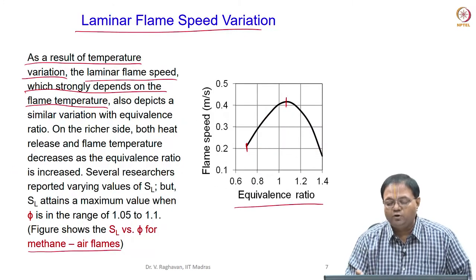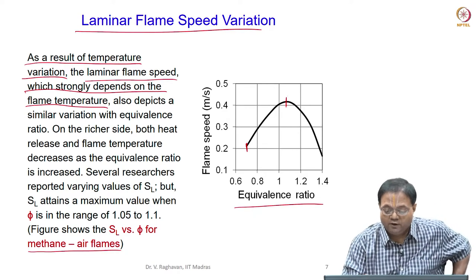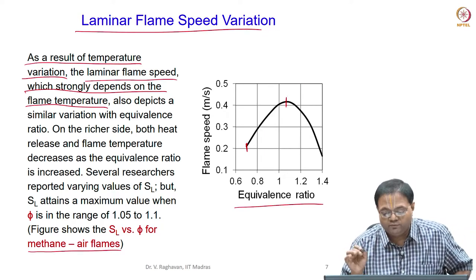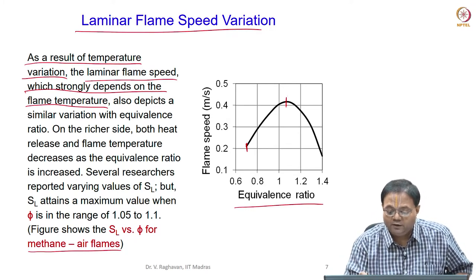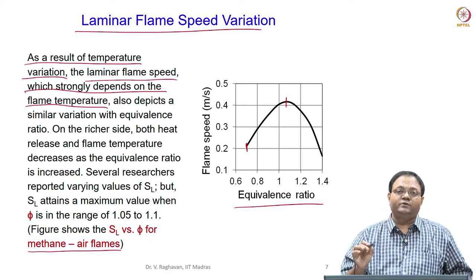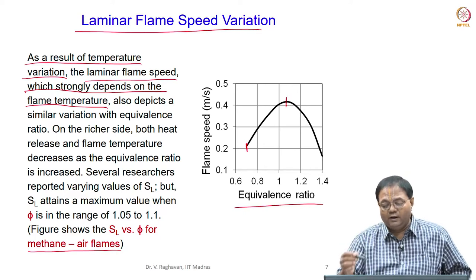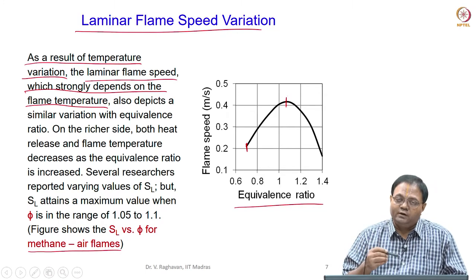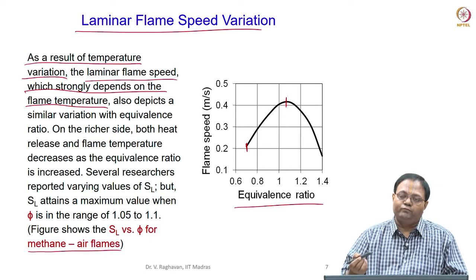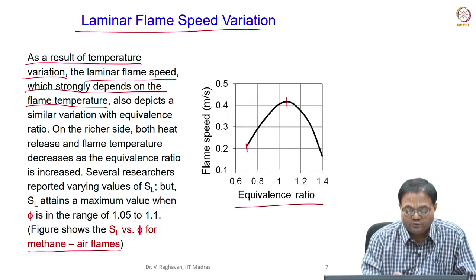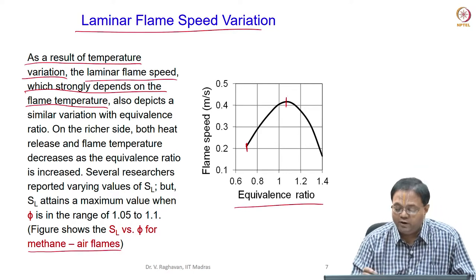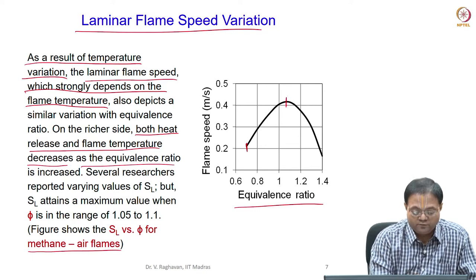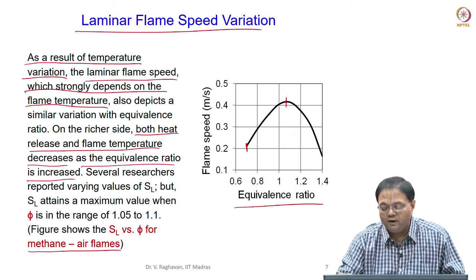Temperature strongly influences the variation of laminar flame speed. For methane-air, the minimum is slightly more than 20 cm/s (0.2 m/s) and the maximum is slightly more than 40 cm/s — around 42 to 44 cm/s — after which it decreases significantly as equivalence ratio is further increased. On the lean side it increases because temperature is increasing and more heat release happens due to additional fuel supply. After reaching the maximum on the richer side, both heat release and flame temperature decrease, causing a decreasing trend in laminar flame speed.